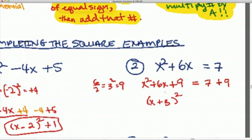So that's the whole point of completing the square: to create this perfect trinomial square so we can rewrite this trinomial into now a binomial expression. So here we have 9 plus 7 is 16.